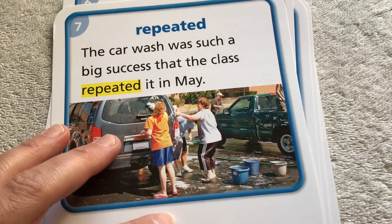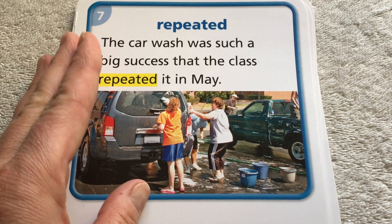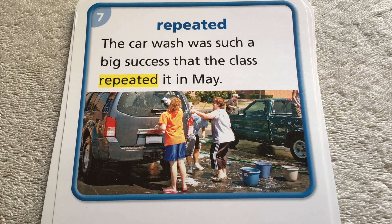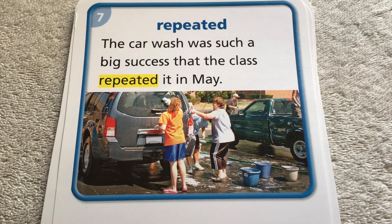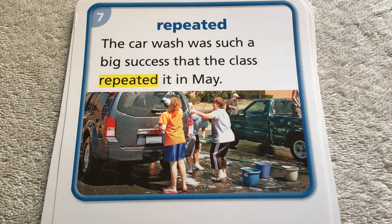Our next vocabulary word is the word repeated. The car wash was such a big success that the class repeated it in May. Here they are washing cars. If they repeated something, or if you repeat something, it means they did it again, or they said something again. In this case, they did the car wash again. If something is repeated, it means somebody did it again, or said it again. So if you repeat something like I just did, I repeated the definition — it means I said it over, I said it again. So repeated means you do it again, or say it again. Do you get it? Do you get it? Ha ha.